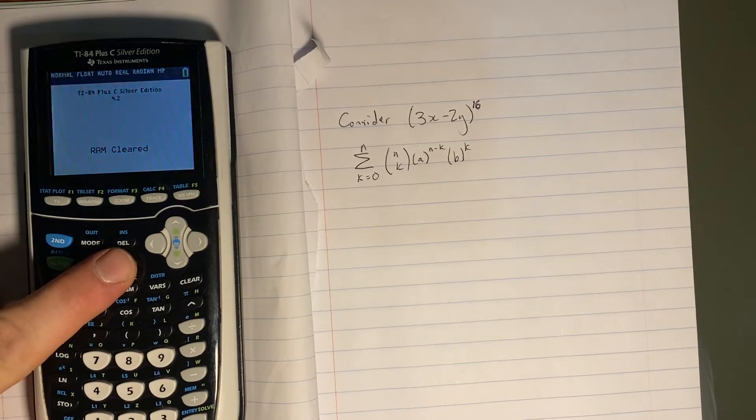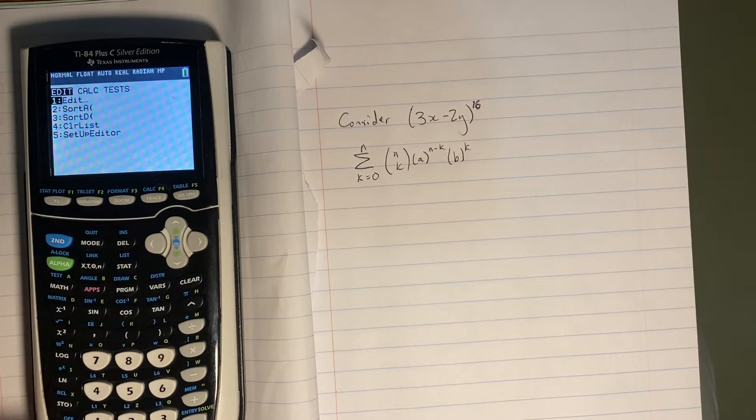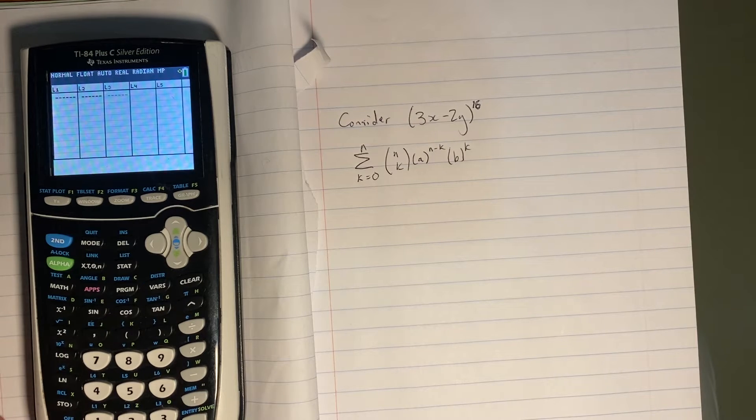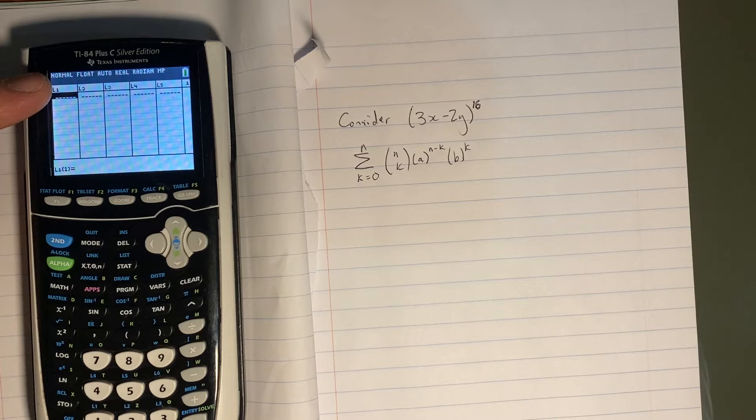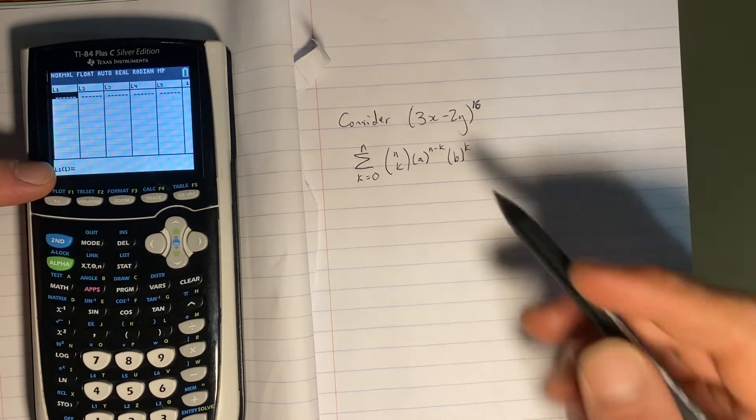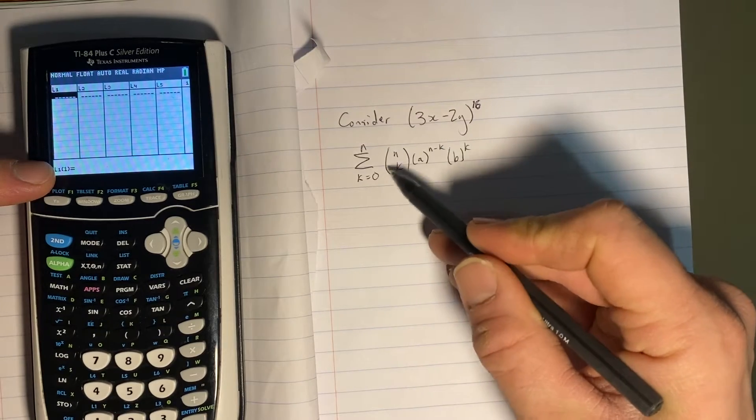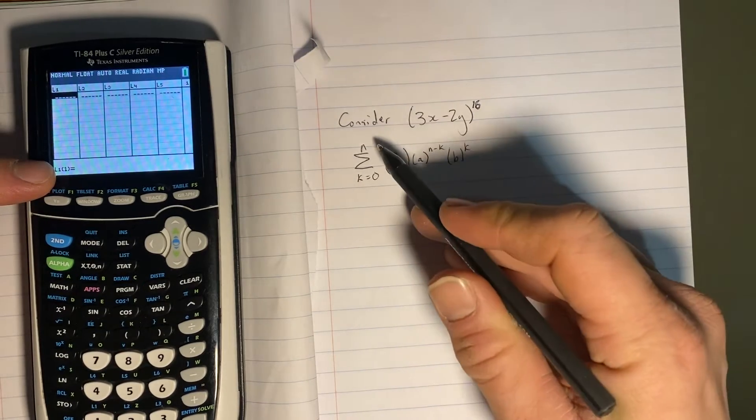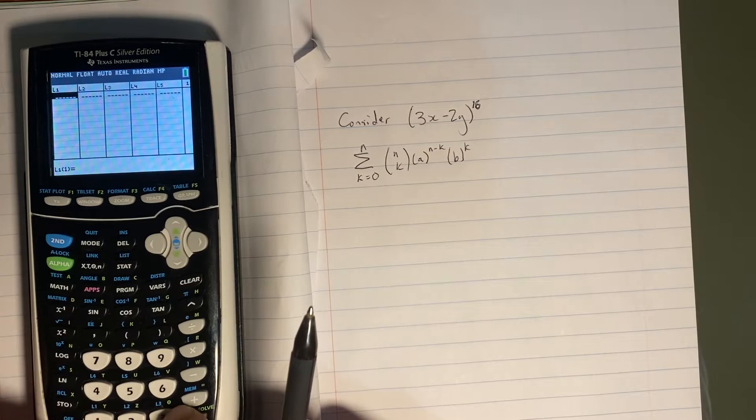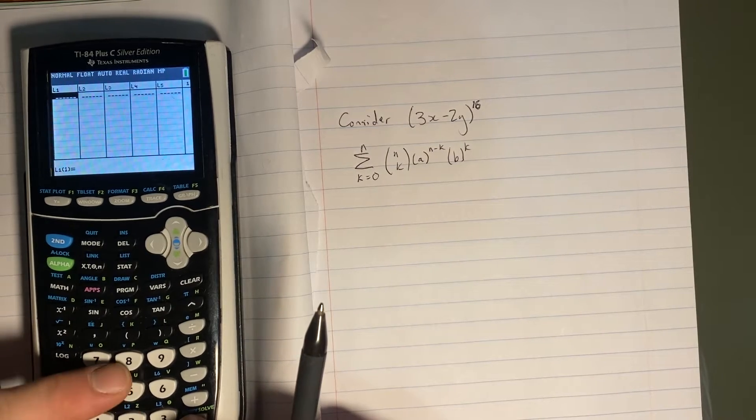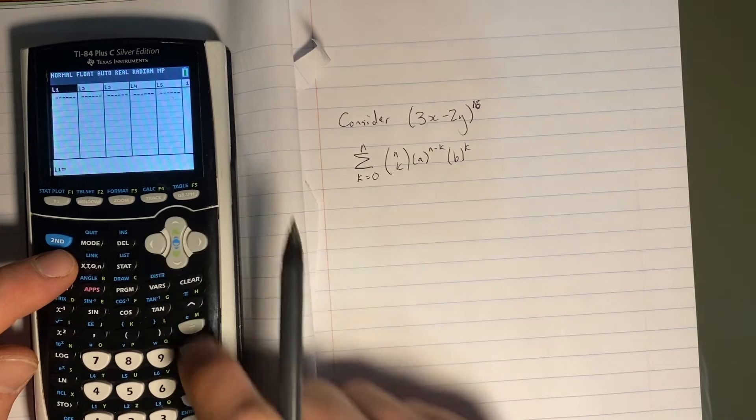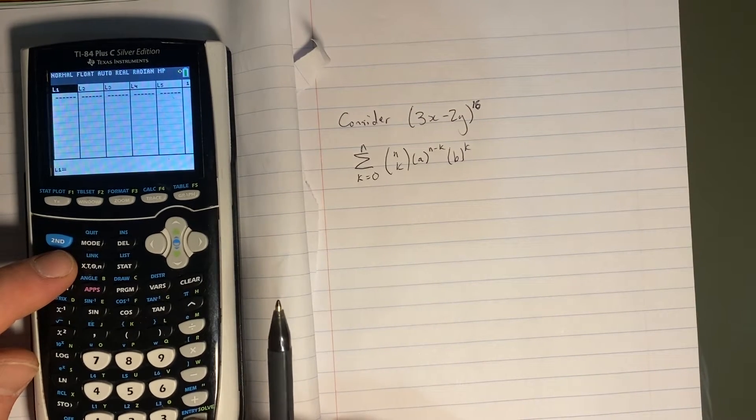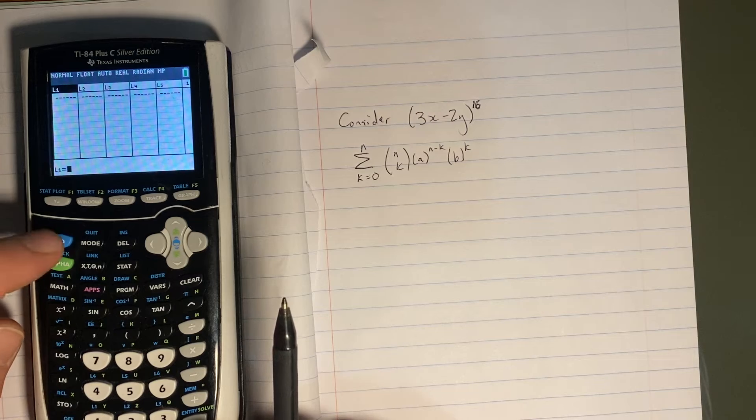So first things first, I'm going to press stat so that it brings me to my edit menu. And then that's going to bring up all of my possible lists. So here in L1, what I'm going to look to do is I'm going to look to put the numbers 0 through 16. And that's because I start at 0 and I'm going up to n equals 16. Now, I can take the time to enter in 0 and then 1 and then 2 and then 3 and 4 and enter them all. Or I can go up so that L1 is highlighted and click Enter so that it gives me an option to type in a value for L1.